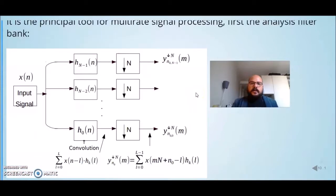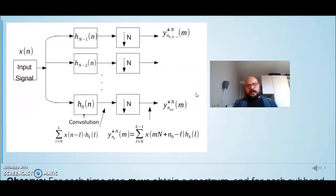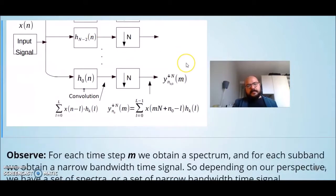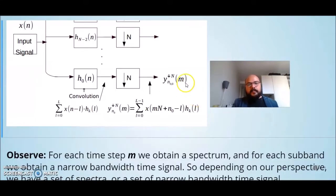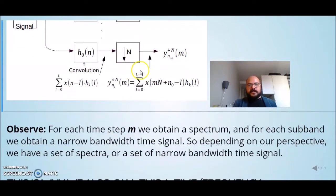So we can see the result in two ways. When we look into each subband, we have narrow bandwidth time signal. But if we look at each step M, we have spectrum. So we have a set of spectra if we look for each step M, or we have a set of narrow bandwidth time signals if we look to each subband.